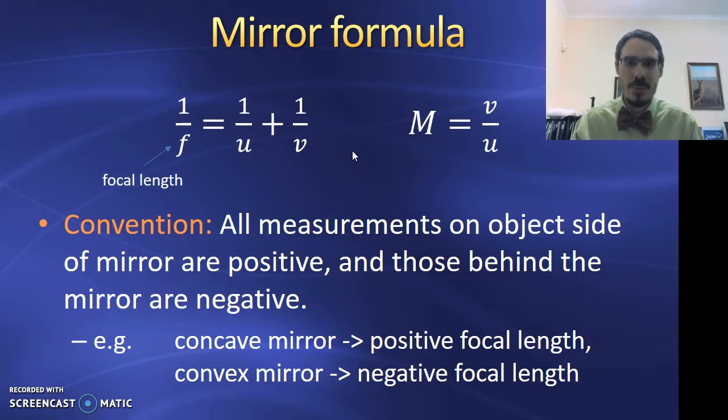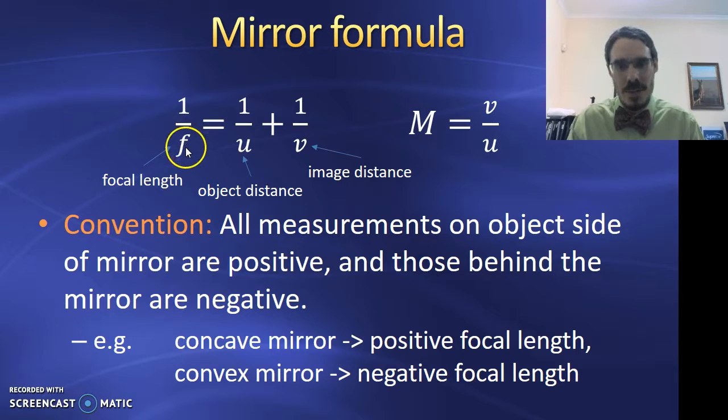What is all this F, U and V? F is the focal length of the mirror. U is the distance from the mirror to the object. And V is the distance from the mirror to the image. Let me say that again. F is the focal length. U is the object distance. V is the image distance.